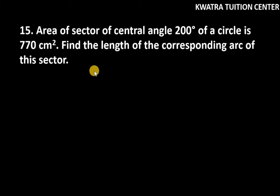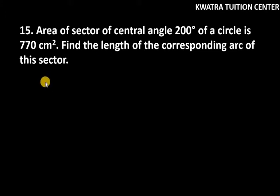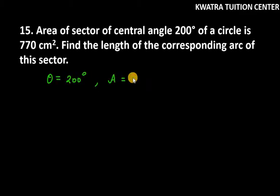Hello everyone, let's start with question number 15. It says the area of a sector with a central angle of a circle is 770 cm².